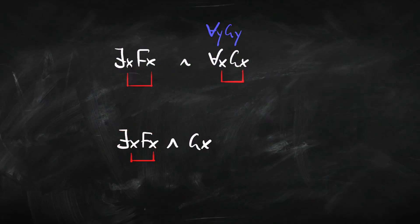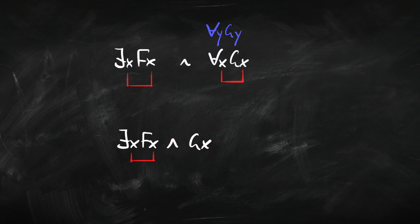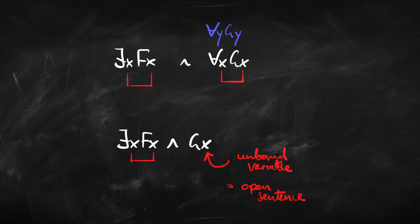In another example, a quantifier binds a variable in the left conjunct only — its scope is just that conjunct. A variable appearing outside that scope doesn't get bound by anything; it remains unbound. A sentence with one or more unbound variables is called an open sentence. If it has no unbound variables — all variables are bound by some quantifier — it's called a closed sentence.